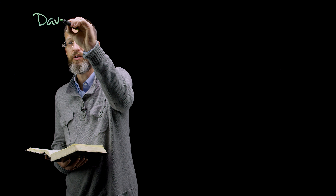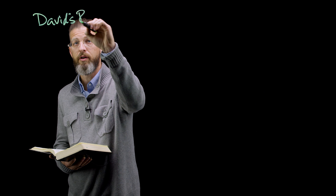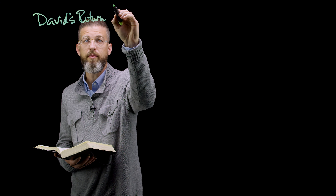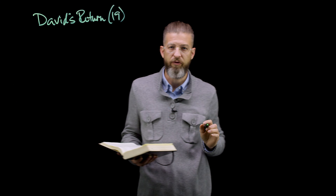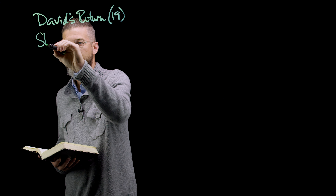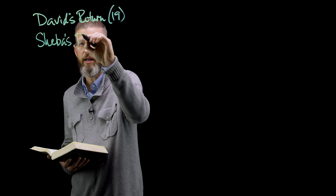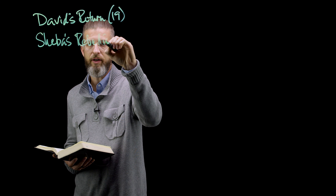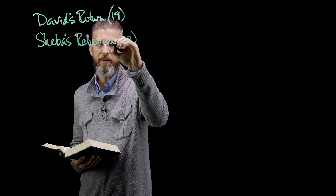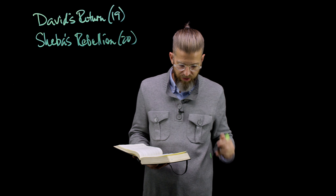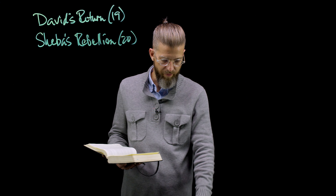There are two main scenes that take place here in the latter portions of the chronological narrative. The first section is about David's return to Jerusalem, which makes up most of chapter 19. And then you have a final attempt to dethrone him by a man named Sheba — generally called Sheba's Rebellion — which makes up chapter 20 of 2 Samuel.